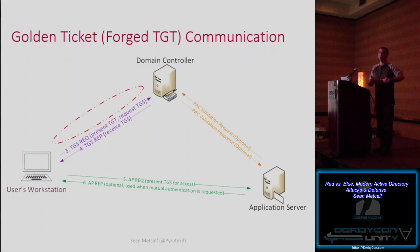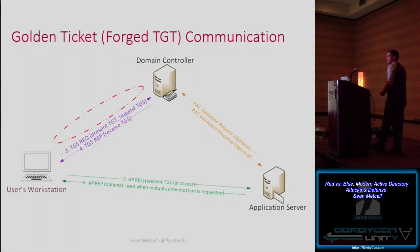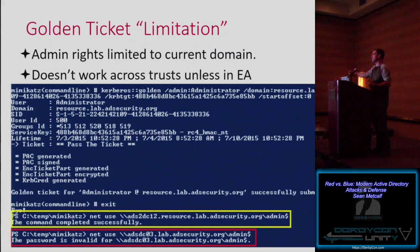Golden tickets. What's a golden ticket? It's a forged TGT — the authentication ticket that proves who you are to the domain controller. If I have the krbtgt password hash, which is used to sign the PAC and the TGT, I can create my own. I can be anyone on the network — even Bugs Bunny, a nonexistent domain admin. I still have to pass it to the domain controller to get service tickets, but in a multi-domain forest, a golden ticket for a child domain cannot be passed to other domains because Enterprise Admins is held by the root domain.